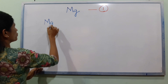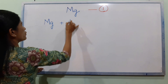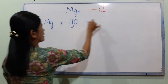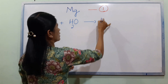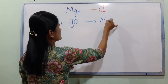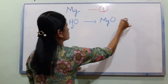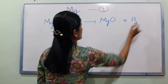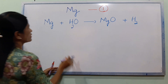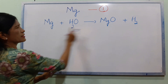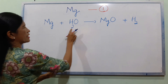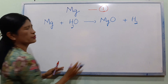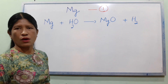Mg plus H₂O gives MgO plus H₂. The equation is: Mg + H₂O → MgO + H₂.